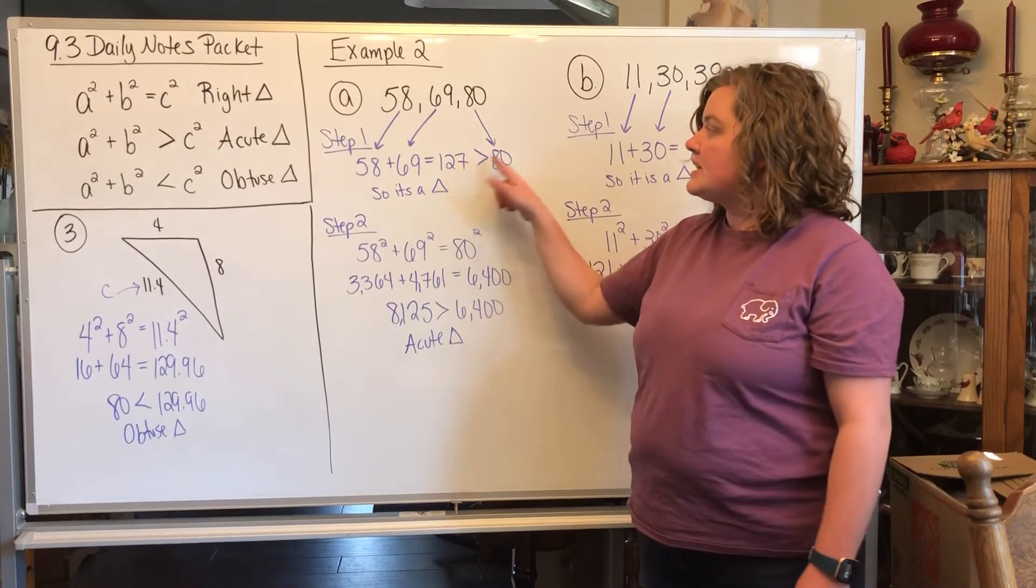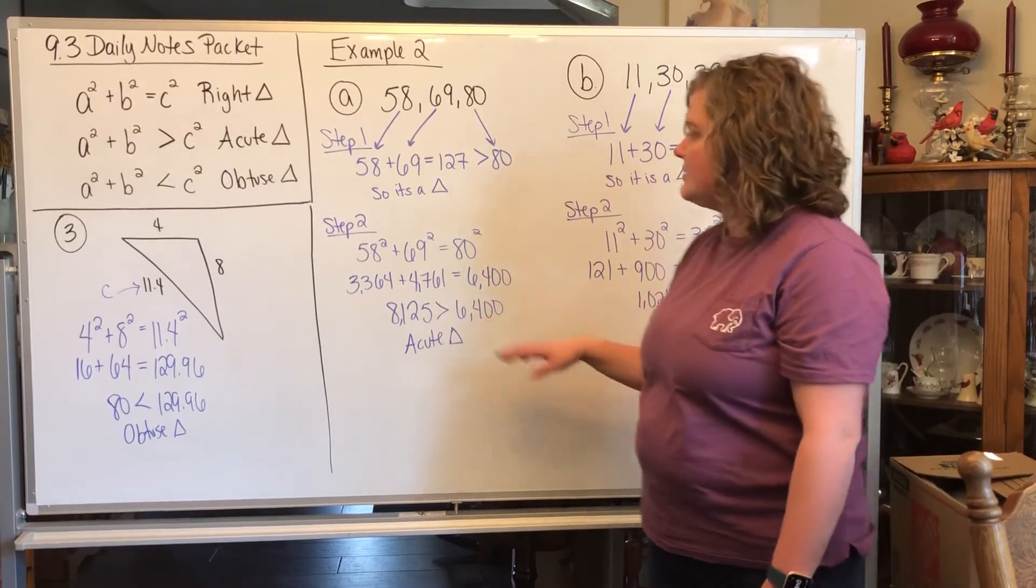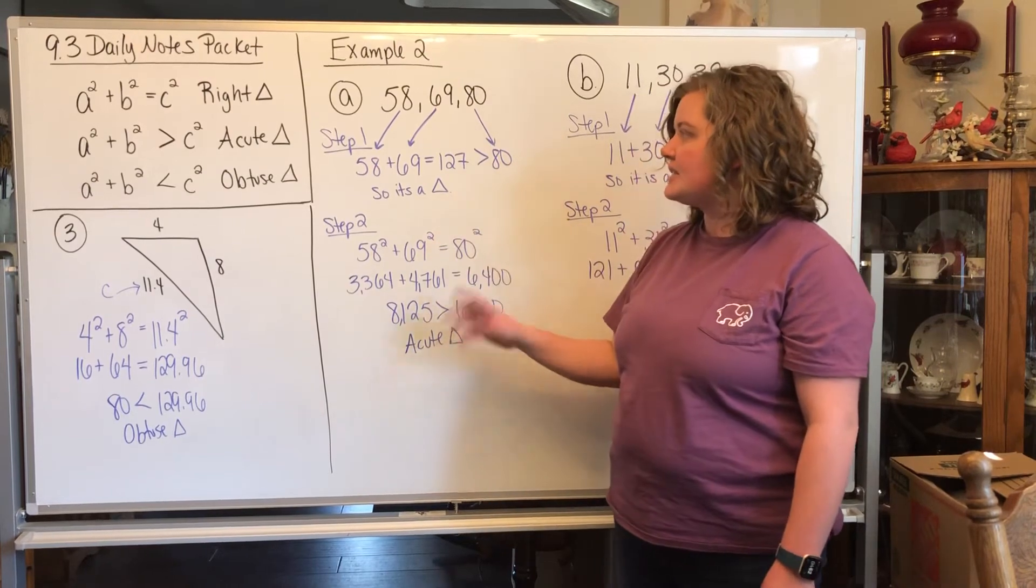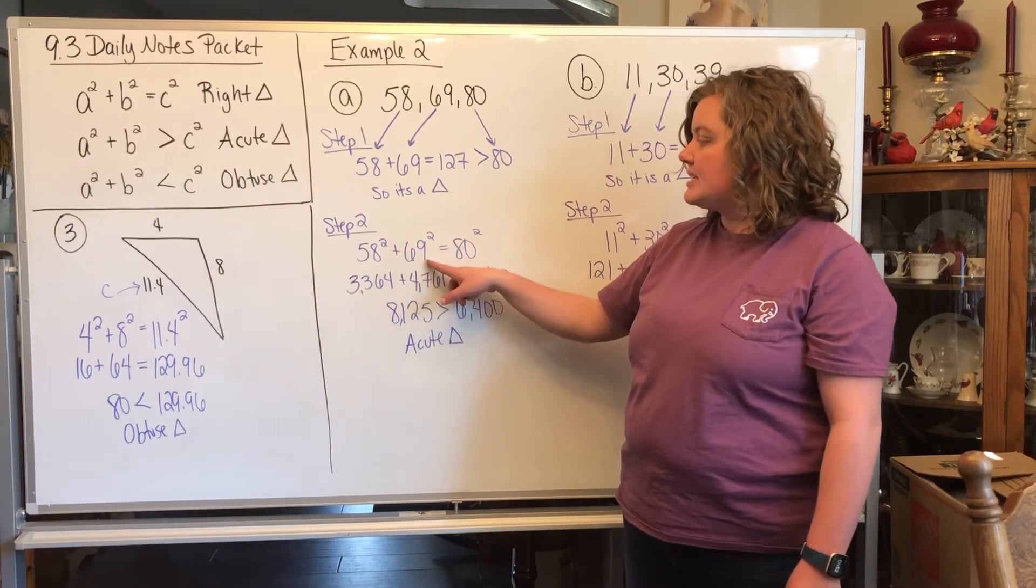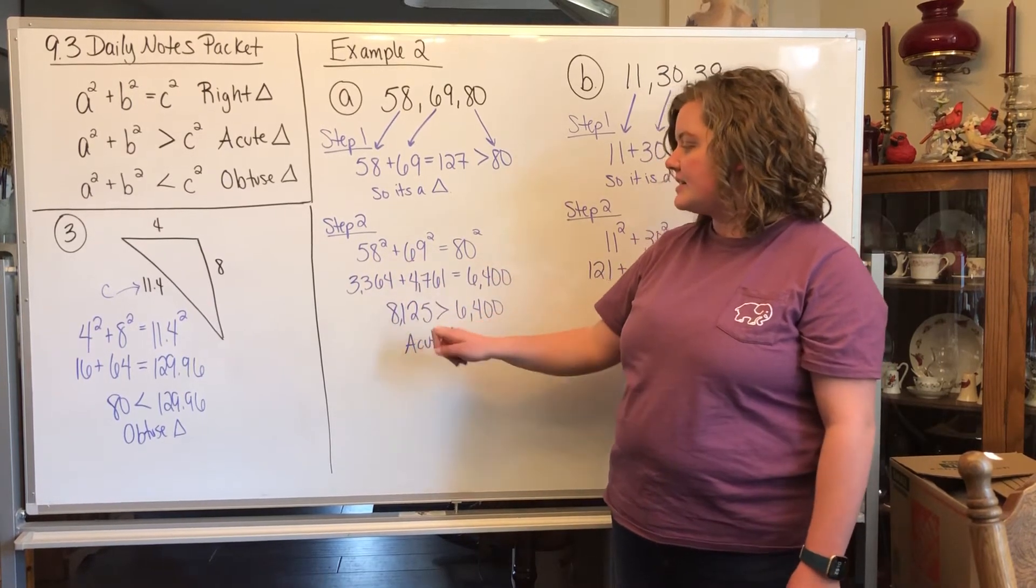If it was equal or less than, it wouldn't be a triangle. So now step 2 is you're going to classify it, so we're going to be doing what we did over here. So you're going to do 58 squared plus 69 squared, and you do that, you get 8,125.